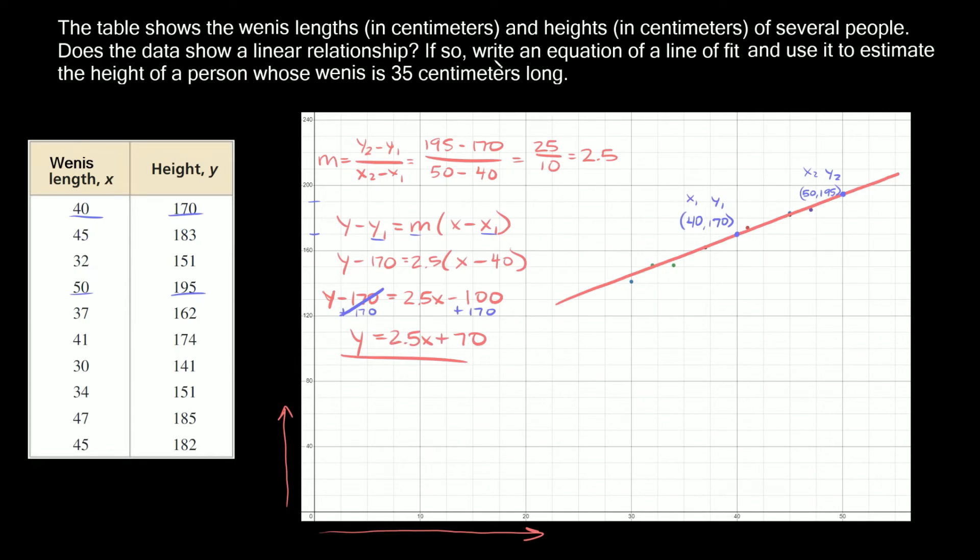We just finished this part: write an equation of a line of fit. It says use it to estimate the height of a person whose wenus is 35 centimeters long. We're going to use this equation and figure out what the height is—our height is y—when the wenus length is 35 centimeters. It's giving us the wenus length which is x, so x equals 35. We're going to plug in 35 for x and see what we get for y.